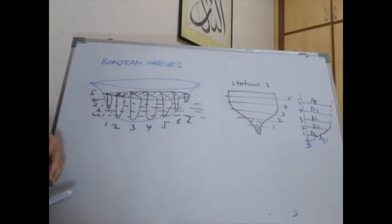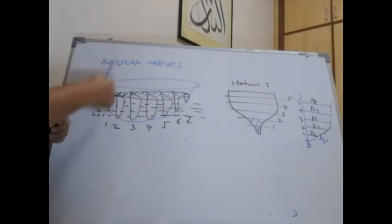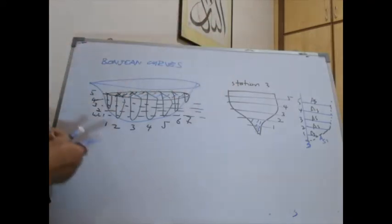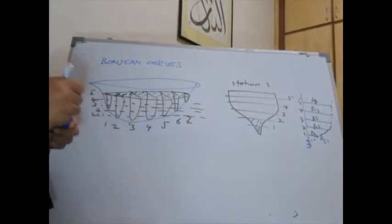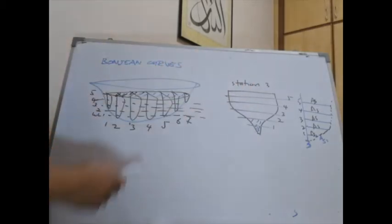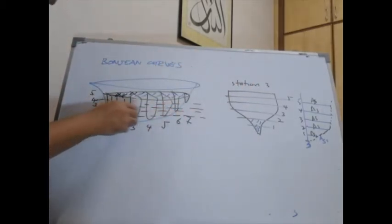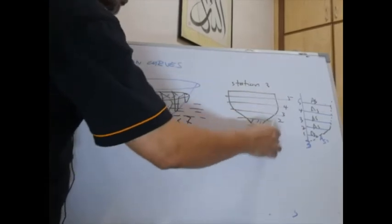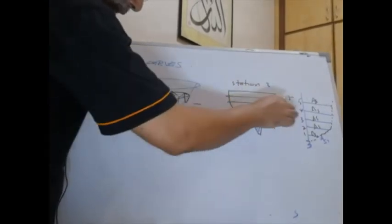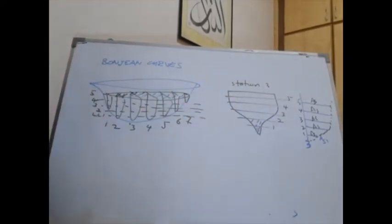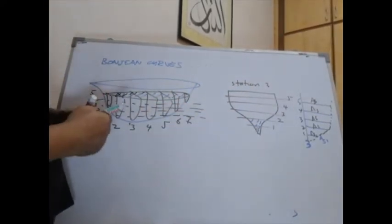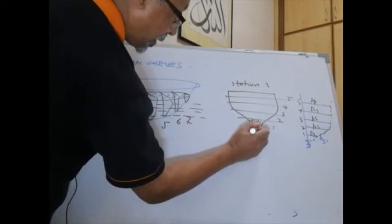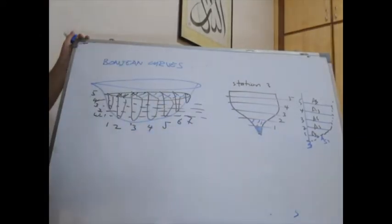For Bonjean curves, what we do is we take one particular station. For example, I'm looking at station 3. So we draw station 3 up to the waterline, and we have a number of waterlines — in this case, 1, 2, 3, 4, 5 waterlines. At each of those waterlines, we draw the lines. We want to calculate the area of the section from the keel, or from the baseline, up to the waterline we are concerned with — for example, waterline 1. So at waterline 1, we calculate the area.